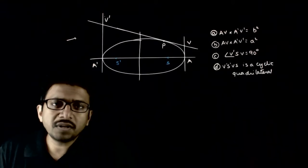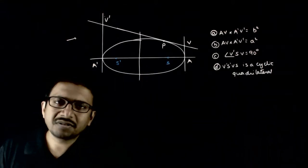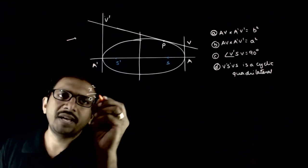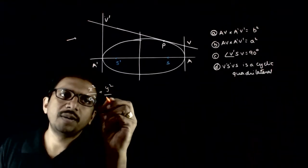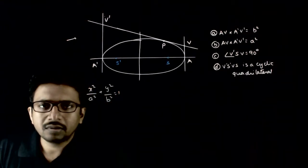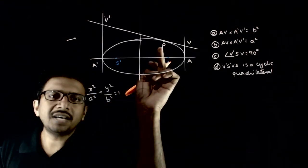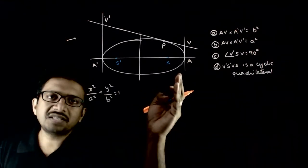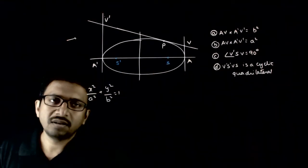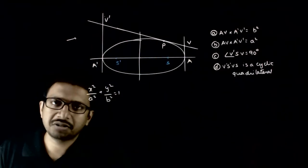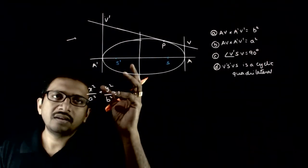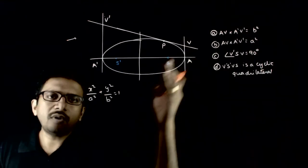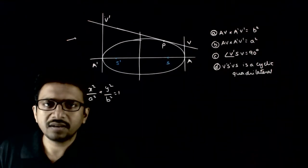Welcome students. In this question, you are given a standard ellipse: x²/a² + y²/b² = 1. The tangent at any point P of this ellipse meets the tangents at the vertices at V and V dash, and S and S dash are the foci of this ellipse. You are given four options and asked to check which of those are correct.